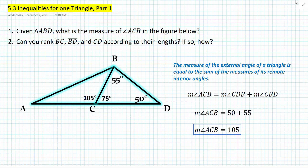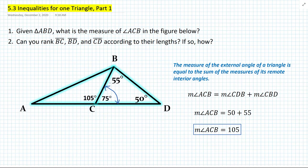Can we now rank the segments according to their lengths? Which segment in triangle CBD should be the largest? If we look at the largest angle in triangle CBD, we have the 75 degrees — that has the biggest opening or the widest angle. So logically, the segment that is opposite that angle should be the longest segment.